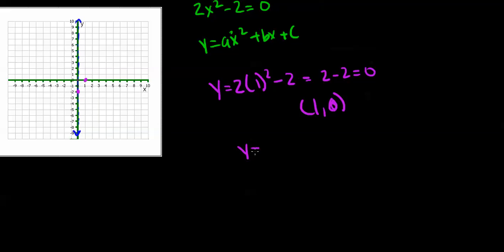Now we do another point, x = 2. You want to pick two points on the same side of the axis of symmetry. When we plug in 2, we get y = 2(2)² - 2. Simplifying, we get 2(4) - 2 = 8 - 2 = 6. So we have the ordered pair (2, 6). Plot that.